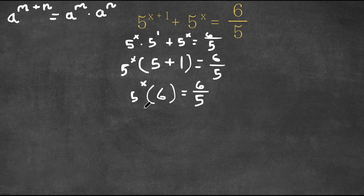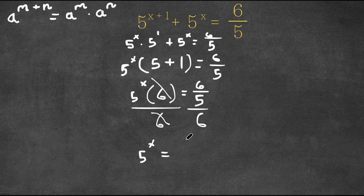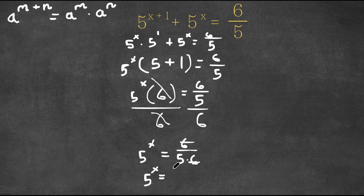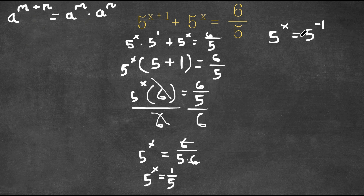Now if I divide both sides by 6, the 6's cancel out and we get 5 to the power of x is equal to 1 over 5. Now 1 over 5 is the same thing as 5 to the power of negative 1, because 5 to the power of negative 1 is 1 over 5. So now we have 5 to the power of x equals 5 to the power of negative 1, which means x is equal to negative 1. So this is our answer.